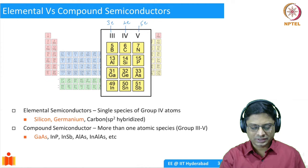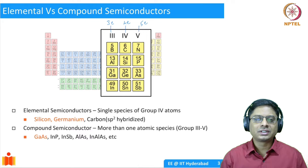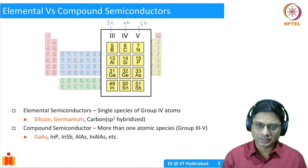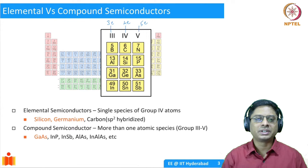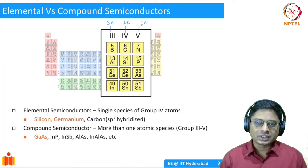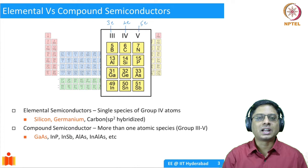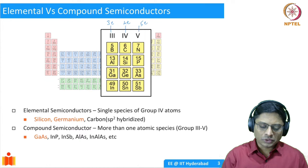If you look at group 4 elements — wherein silicon falls — silicon has an atomic number of 14 and is a very good semiconductor. Similarly, germanium is another famous semiconductor. Recently, one of the allotropes of carbon has been shown to exhibit very interesting properties, which is called graphene. These are all called elemental semiconductors, meaning the semiconductor consists of only one type of atomic species: silicon, germanium, or carbon.